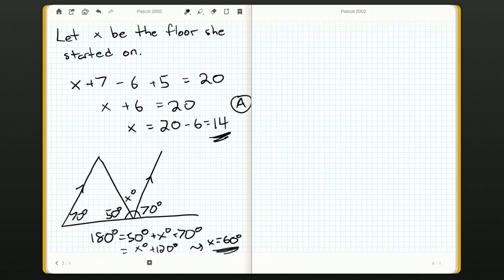We can clean this up. We get x degrees plus 120 degrees, and from there we can quickly work out. Just subtract 120 on both sides, and you'll get x is 60 degrees.